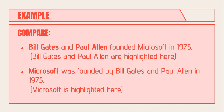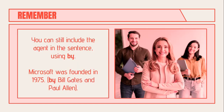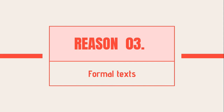This is the reason we use the passive as a second reason. You can still include the agent in the sentence by using the preposition 'by'. For example, you may say 'Microsoft was founded in 1975,' or you can say 'Microsoft was founded by Bill Gates and Paul Allen in 1975.'